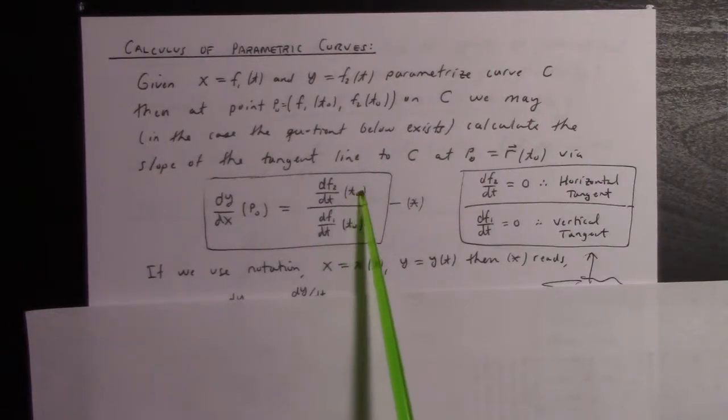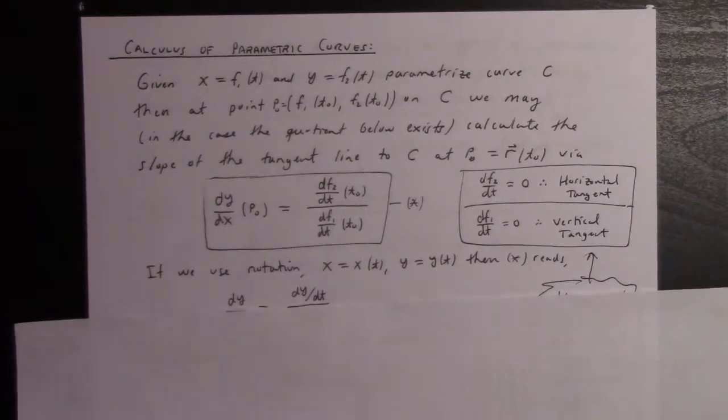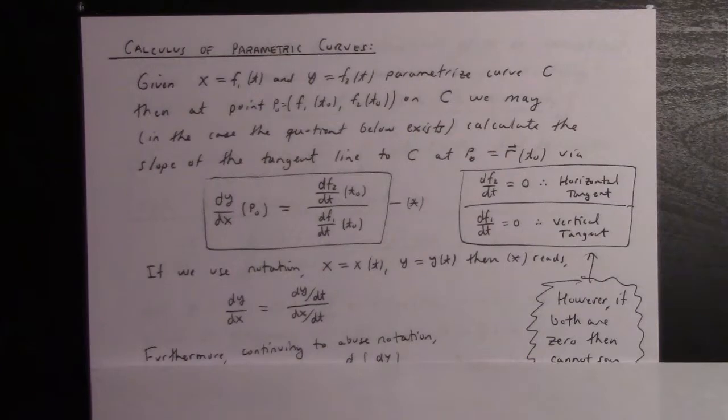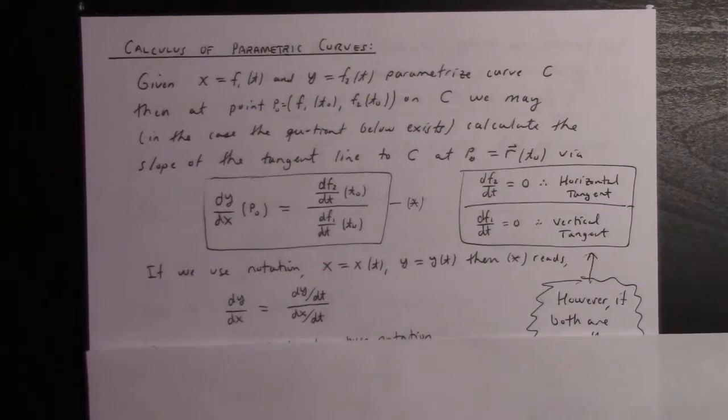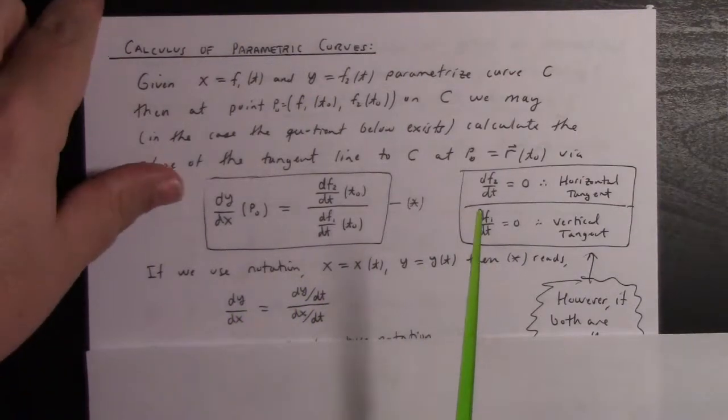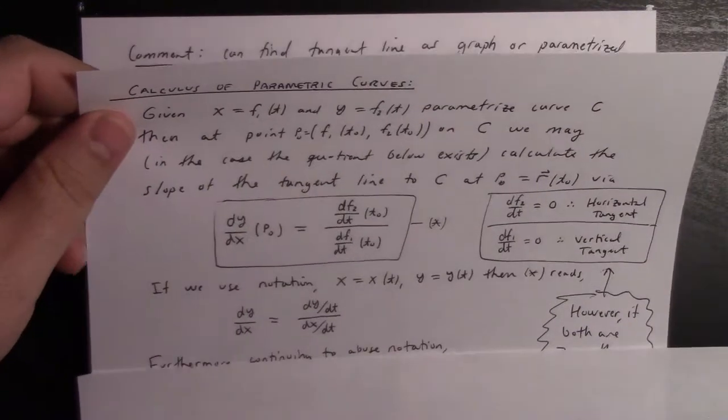In the case that both of them are zero, you have to approach it in a limiting sense. In the other notation, this just looks like dy/dx equals dy/dt divided by dx/dt, which from a heuristic sense kind of makes sense.